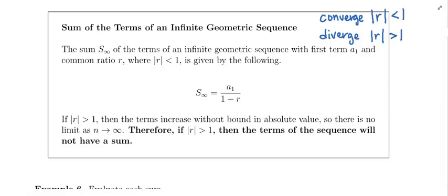Let's talk about the convergence case first. The sum S∞ of the terms of an infinite geometric sequence with first term A1 and common ratio R, where the absolute value of R is less than 1, is given by: S∞ = A1 divided by 1 minus R.